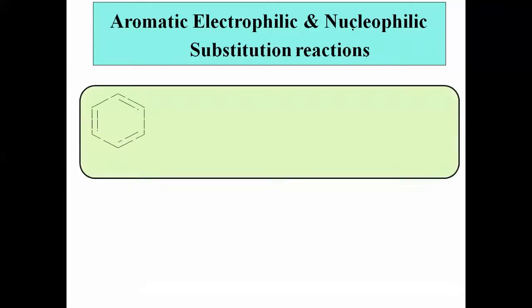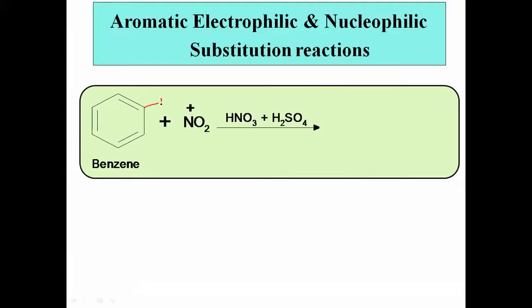What is a substitution reaction? Consider the example of benzene treated with a mixture of nitric acid and sulfuric acid. Nitric acid reacts with sulfuric acid to form the nitronium ion NO2+. One hydrogen atom from the benzene ring is replaced by the nitro group, giving nitrobenzene. Since one atom or group is replaced by another, this is called a substitution reaction.